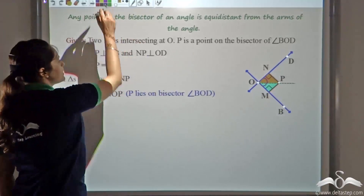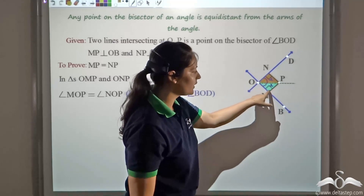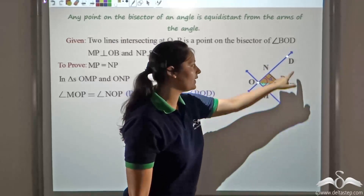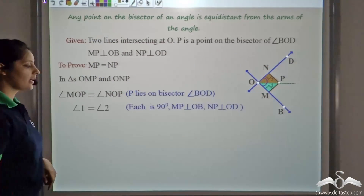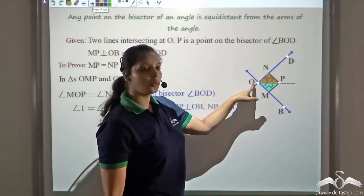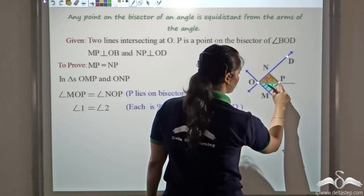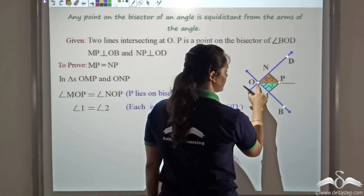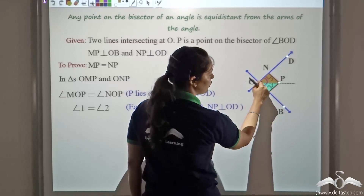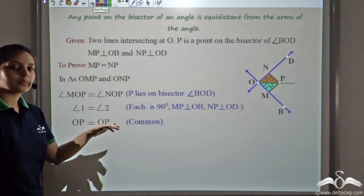Let us call these angle 1 and angle 2. Angle 1 is equal to angle 2 — both are 90 degrees — since MP and NP are perpendicular to OB and OD respectively. The third condition is that OP is common to both triangles OMP and ONP, so OP is equal to OP.